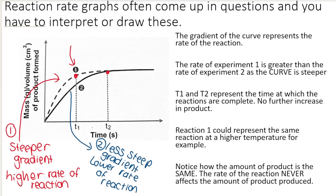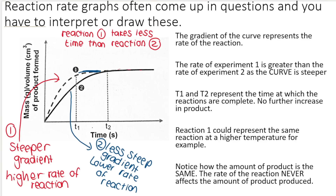Reaction two has a less steep gradient — a smaller gradient — and therefore a lower rate of reaction. Maybe reaction number one took place at a higher temperature, as we dealt with in the collision theory video. Higher temperature means more effective collisions per unit time, so higher rates of reaction. Maybe reaction two took place at a lower temperature. The maximum amount of product formed was the same for both reactions, which would indicate something like a temperature change. Increasing the temperature doesn't mean one reaction makes more product — just the same amount, but quicker.